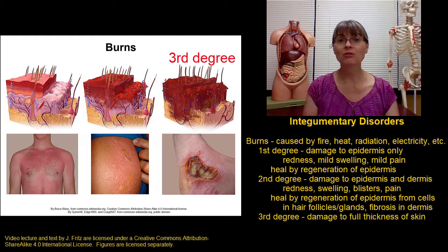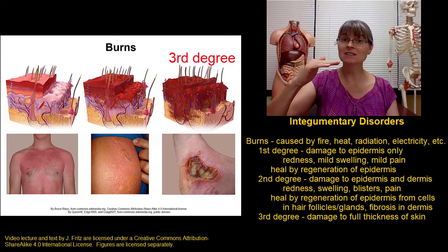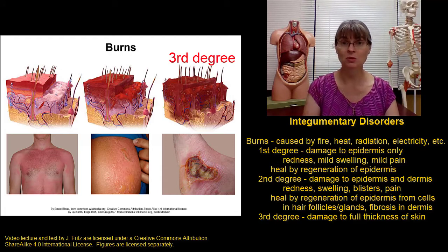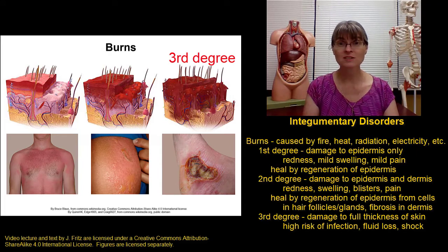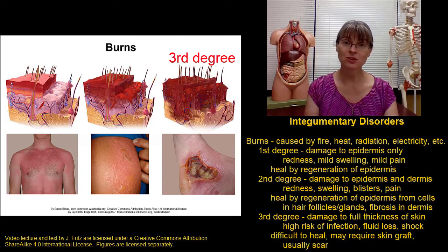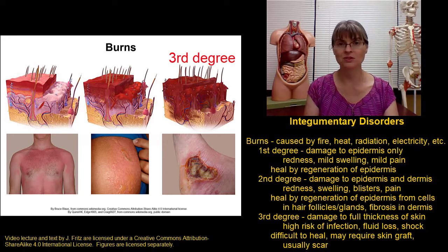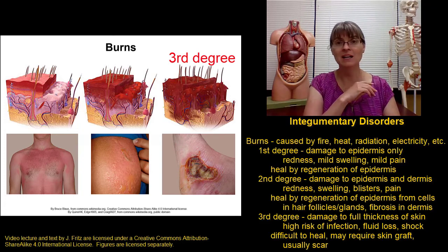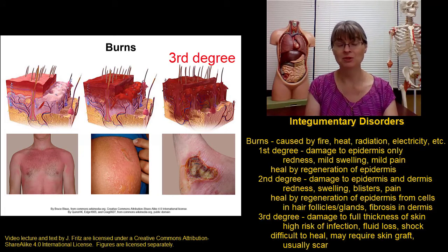A third-degree burn involves the full thickness of the skin — the entire epidermis and entire dermis — down to the underlying hypodermis or muscle tissue. With this type of burn, there is a high risk for infection, fluid loss, and even shock from the toxic effects of all the damaged cells. Because a third-degree burn damages the full thickness of the skin, we don't have any more stratum basale to regenerate from, and the hairs, glands, and nerve endings in that area are destroyed. Third-degree burns heal very slowly, tend to produce a lot of scarring, and often require skin grafts — a section of skin taken from elsewhere on the body and placed over the burned area to provide the cells needed to regenerate the epidermis and dermis.